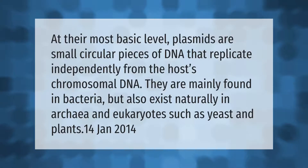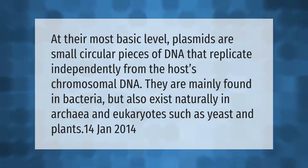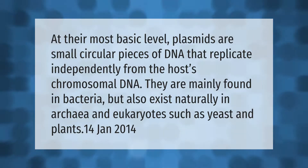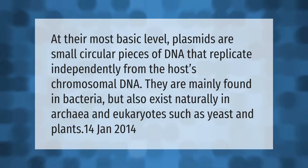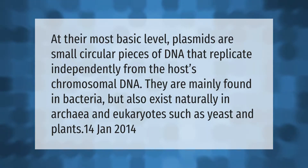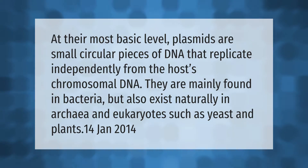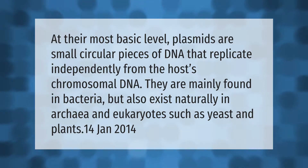At their most basic level, plasmids are small circular pieces of DNA that replicate independently from the host's chromosomal DNA. They are mainly found in bacteria but also exist naturally in archaea and eukaryotes such as yeast and plants.